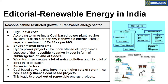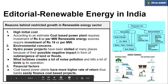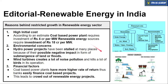Renewable energy sources also have their own environmental concerns. Hydropower plants lead to submergence of land and may cause floods — large reservoirs or dams require evacuating large areas, and many forests get submerged. This is why many hydropower projects have not received environmental clearances. Wind turbines create noise pollution and also kill a lot of birds during operation.